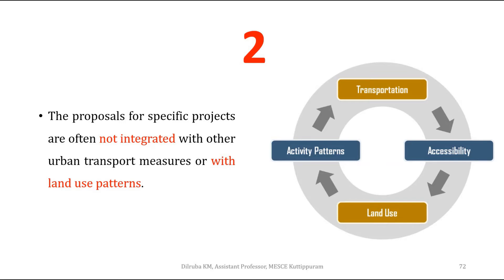A second problem is that proposed projects are not integrated with existing land use patterns. In transportation engineering, when we plan transportation infrastructure, it affects accessibility and mobility of people, which in turn affects the land use pattern of the city. Changes in land use then alter activity patterns, creating further demand for more transportation infrastructure.